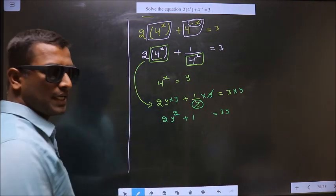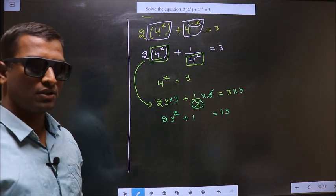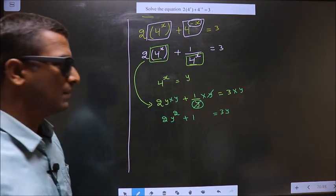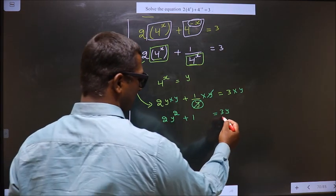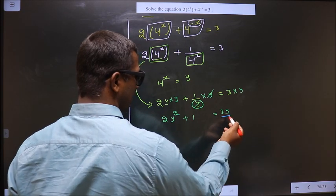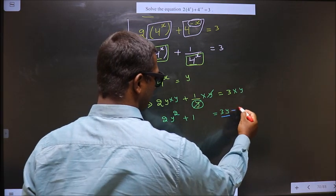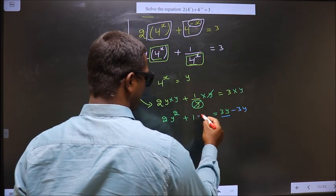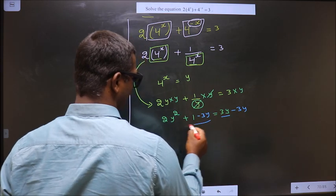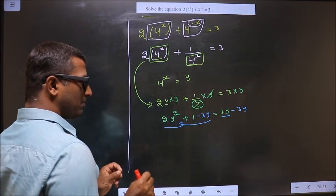Now you bring all the terms to one side. What I mean is, 3y should not be present on this side, so to remove 3y from here, you subtract 3y on both sides.